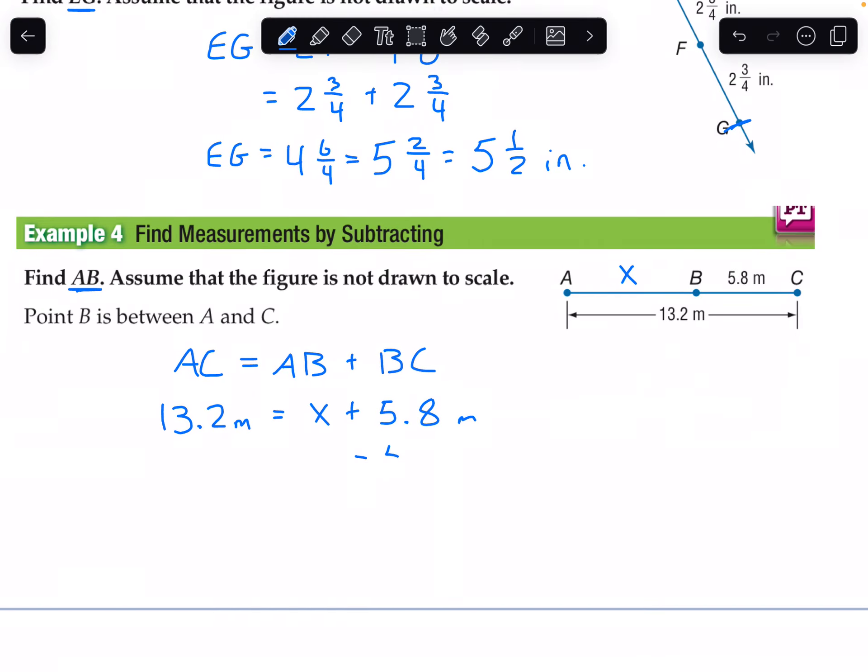We will subtract 5.8 from both sides. 5.8 is almost 6. 13.2 minus 6 would be 7.2, but I had to add an extra 0.2 to get that. 6 plus 7 is 13. So 7.2 plus 2 more is 7.4. Therefore AB equals 7.4 meters.